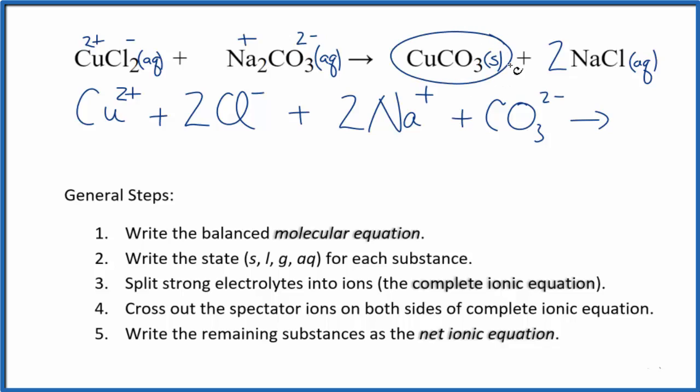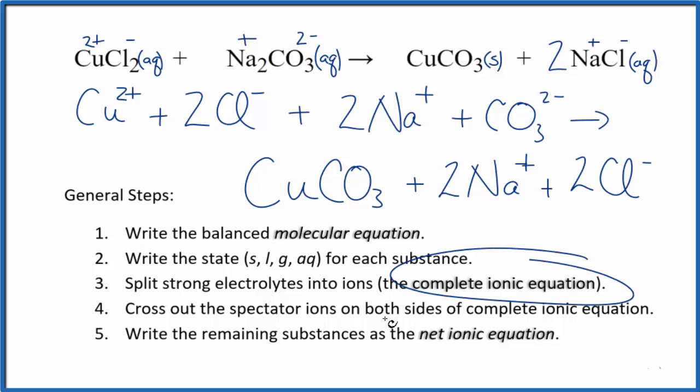For the products, we don't split solids apart in net ionic equations. So we just write CuCO3. Keep that together. And then positive and negative. So two sodium ions, just like the reactants. And then we have the two chloride ions, also just like the reactants. This is the complete ionic equation.